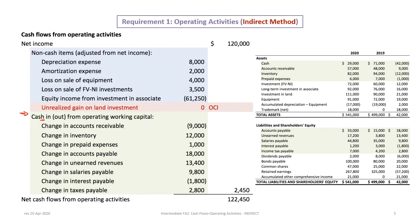Now we look at this green area where we deal with changes in operating working capital, comprised of current assets and current liabilities. Dividends, even though it's a current liability, belongs in the financing section because it relates to common shares. After non-cash adjustments, we look at changes in current asset and current liability accounts. Note that even though cash is a current asset, we don't include it here — we reconcile it at the end.